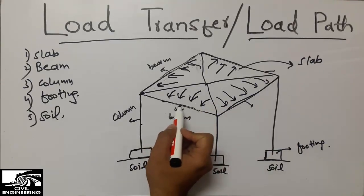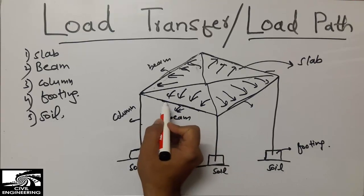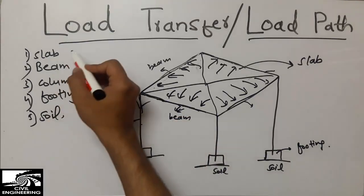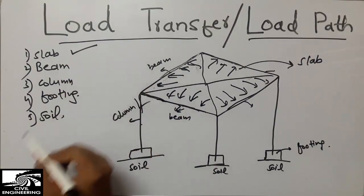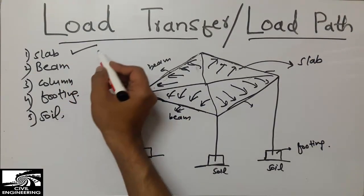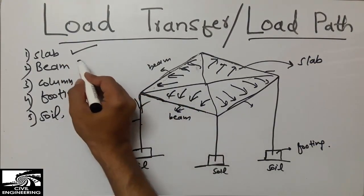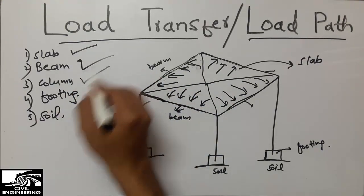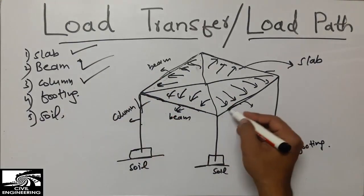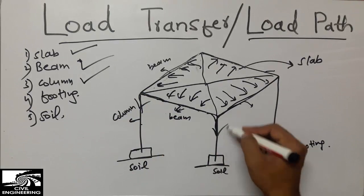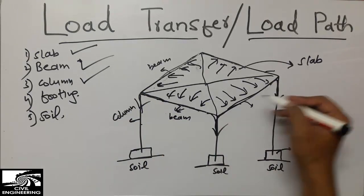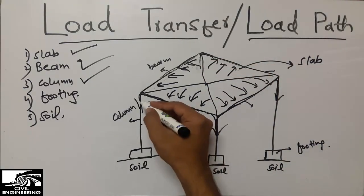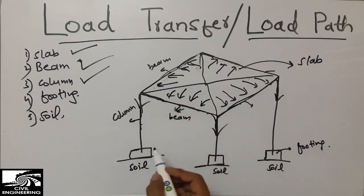After the load comes from the slab to the beam, the beam will now transfer its load along its length to the columns. First the load is received by the slab, then the slab divides the load into the four beams, and then from the beams the load comes into the columns. The beam transfers this load into each column at its ends.